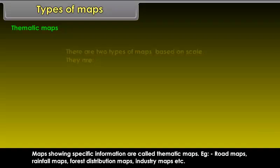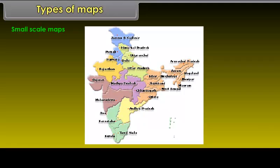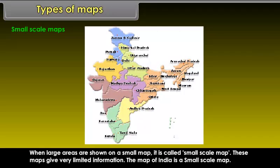There are two types of maps based on scale. They are Small Scale Maps and Large Scale Maps. When large areas are shown on a small map, it is called Small Scale Map. These maps give very limited information. The map of India is a small scale map.